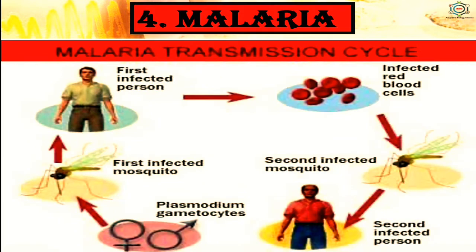In the malaria transmission cycle: first infected person has infected red blood cells, which enter the mosquito. From the mosquito, the parasite is transmitted to a second infected person. Plasmodium gametocytes present in the first infected mosquito pass to the first infected person, then to infected red blood cells, and then to the second infected person through a second infected mosquito.